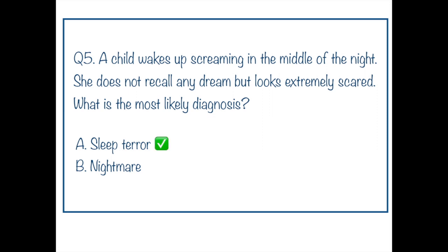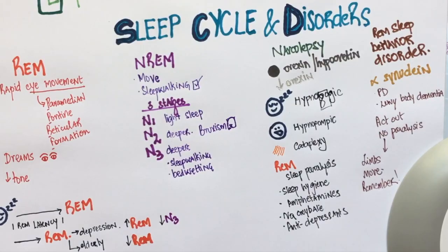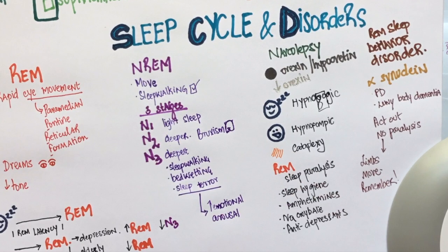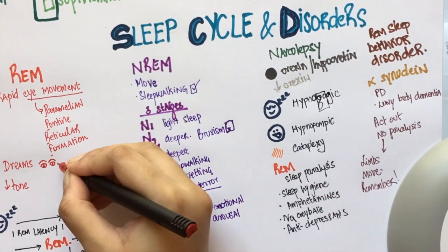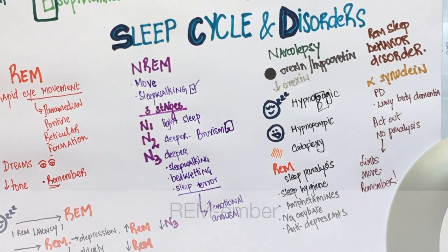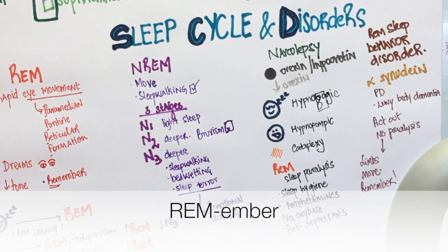Sleep terrors occur in the third stage of NREM sleep. There is a sudden emotional arousal which causes the patient to feel very scared. Nightmares, on the other hand, will occur in the REM stage and patients will be able to recall their dreams. REM stage can be remembered.